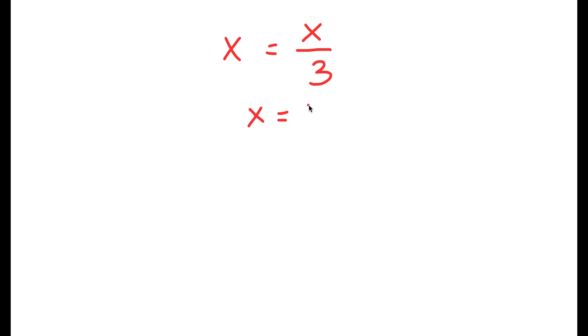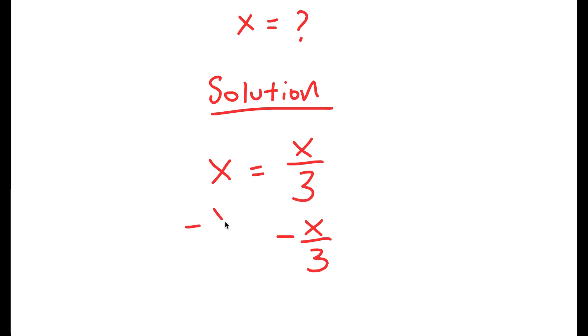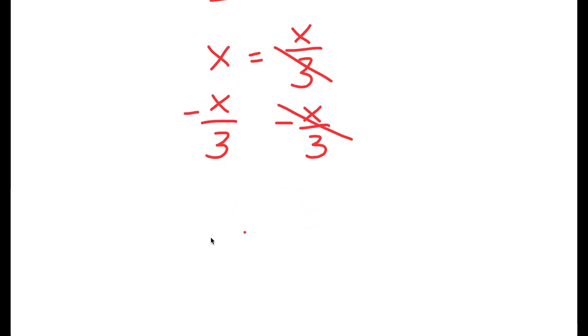The variable I want to find the value of is x. So for my solution, again, my equation is x equals x over 3. What I'm first going to do is subtract x over 3 on both sides. So then these two cancel out and I get x minus x over 3 is equal to 0.